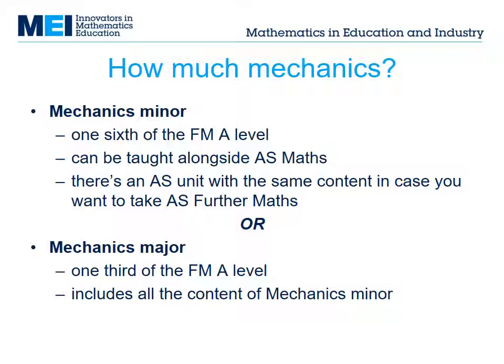You don't have to take any mechanics in A-level Further Maths, but if you do want to, you can choose mechanics as a minor option — one-sixth of the A-level — or as a major option, one-third of the A-level.